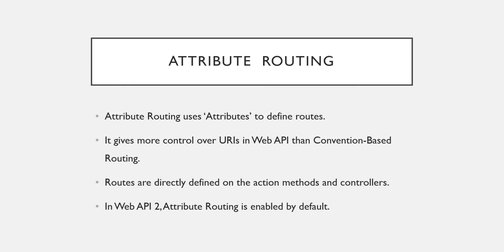In the previous video we saw convention-based routing. In convention-based routing we define all the routes in the WebApiConfig file. In attribute routing, we make use of attributes to define the routes, and in C# or overall in .NET, attributes are defined in square brackets above your method or class.